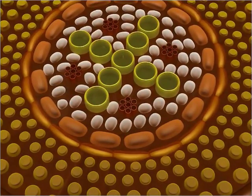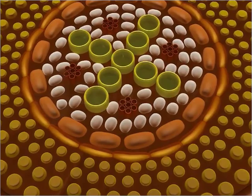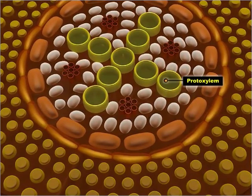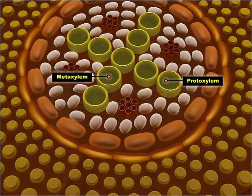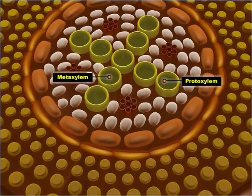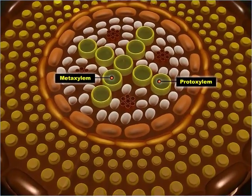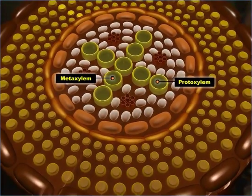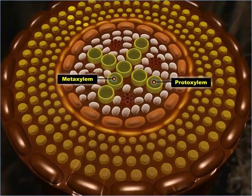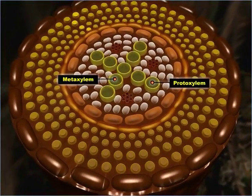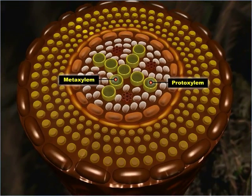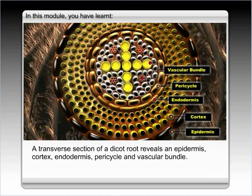The xylem in roots is exarch. This implies that the proto-xylem lies towards the periphery whereas the meta-xylem lies towards the center. Note that the proto-xylem is the early-formed xylem whereas the meta-xylem forms later.